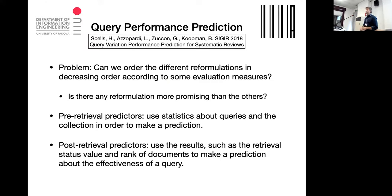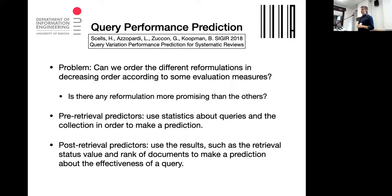These methods can be pre-retrieval predictors — using statistics stored in the collection — or post-retrieval, where you don't use relevance assessment but look at, for example, the frequency of terms in the top-k ranked documents to predict query effectiveness. There are plenty of such methods, and the Ducon et al. paper contains many comparisons of these approaches.